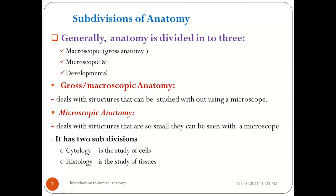Microscopic anatomy covers structures that can only be seen using a microscope — either an electron microscope or a light microscope. For instance, cells and tissues cannot be seen with our eyes. Microscopic anatomy is divided into two branches: the study of cells is known as cytology, and the study of tissues is known as histology.